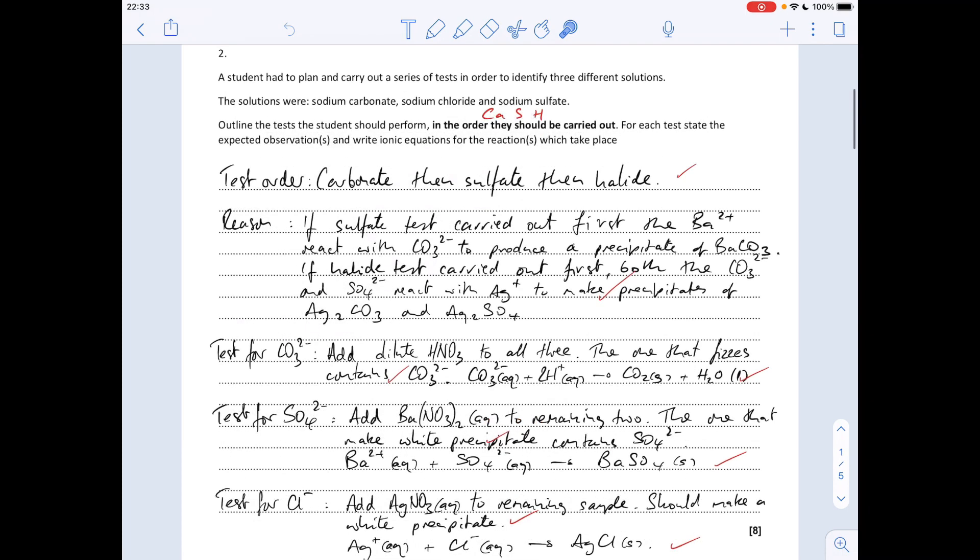Question two, big eight mark planning question where you've got to plan out a series of tests the student can perform to establish which one was sodium carbonate, which one was sodium chloride, and which one was sodium sulphate. We've got to include the order they should be carried out with a little explanation and then the tests with the observations and the ion equations.